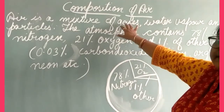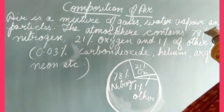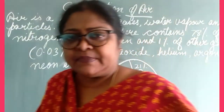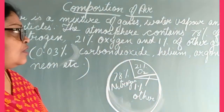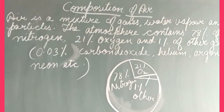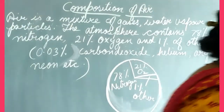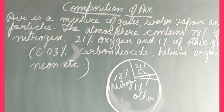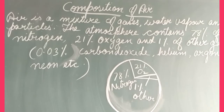So what is air? It is the mixture of gases, water vapour, and dust particles. The atmosphere contains 78% of nitrogen, 21% of oxygen, and 1% other gases.